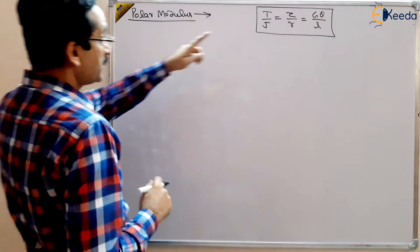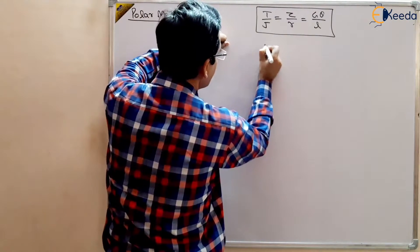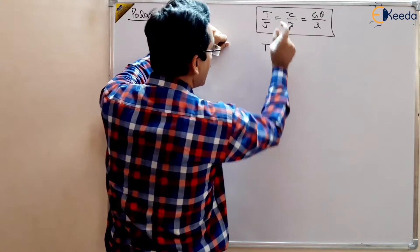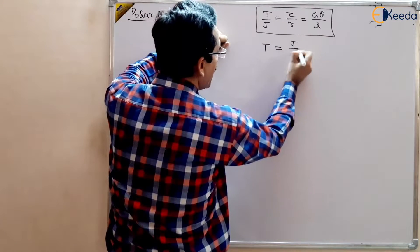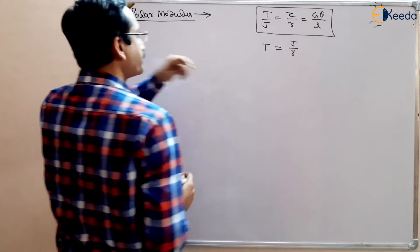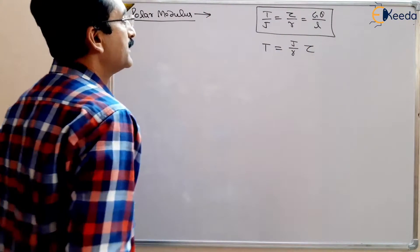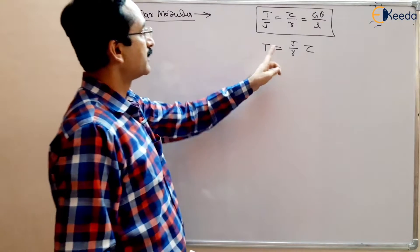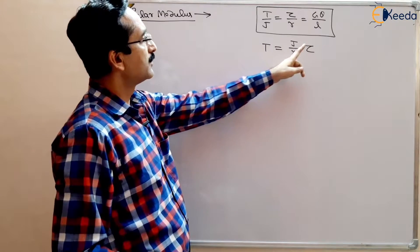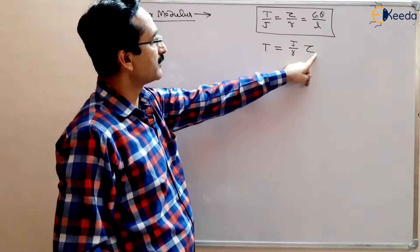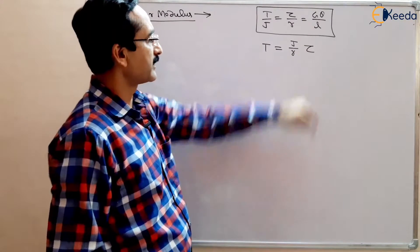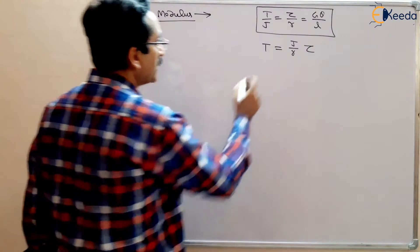T by J tau by R G theta upon L. In this equation, torque, we have found out the torque that was given by J by R tau. J by R tau. This was the torque at a certain radius. The shear stress was at that radius.